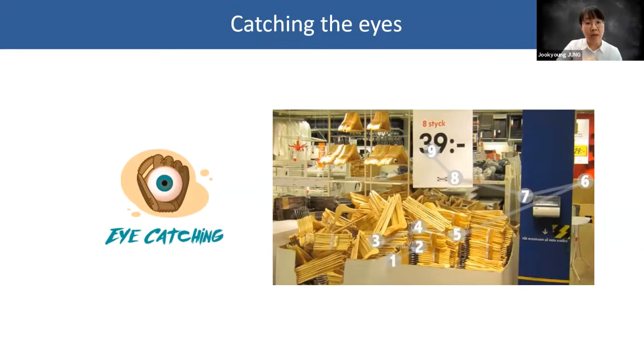So by examining how customers' eyes moved in a store and which information triggers buying, Ikea may be able to make some decisions on how to display products and related information such as price.